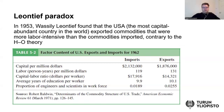Leontiev had detailed statistics of the USA. He is famous for his input-output model and input-output tables. Using those input-output data, he could show that the USA, which was the most capital abundant country after the Second World War in the 1950s, was actually exporting commodities that were labor intensive and more labor intensive than the commodities imported from the rest of the world. This is exactly contrary to the Heckscher-Ohlin theorem.